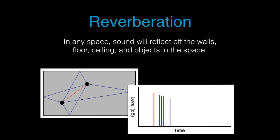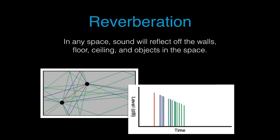They're traveling further to get to the listener, and so as we know, they're going to have a reduction in amplitude, and are just going to start rolling off the high frequencies. Next, we have sounds that bounce off two surfaces. These are going to take even longer to reach the listener because they're traveling further, and also they're going to be perceived as quieter, and may have more of those high frequencies rolled off.